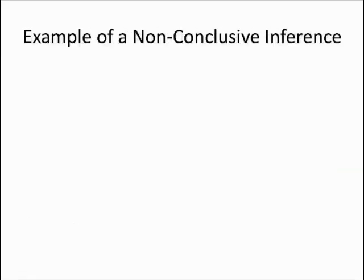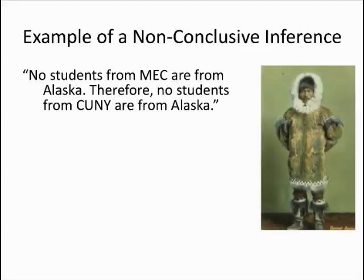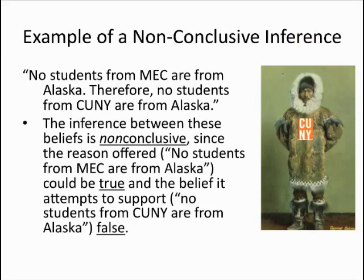We also have inferences which we consider to be non-conclusive. Notice that the premise offered could be true at the same time that the conclusion could be false, so there is no necessary relationship among these statements. It's non-conclusive. It is possible that there are no students from MEC that are from Alaska, but it's also possible that there are students from CUNY who are from Alaska. So this is a non-conclusive inference.